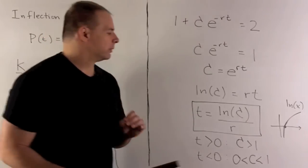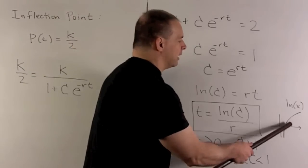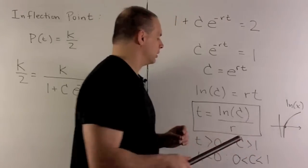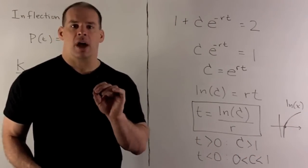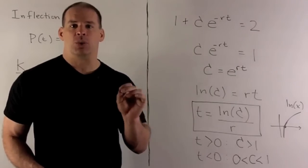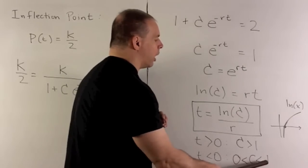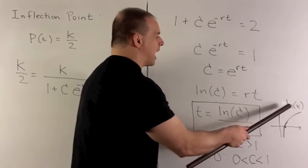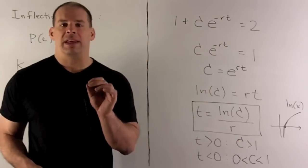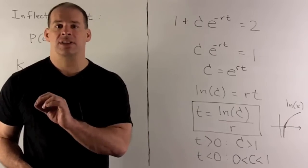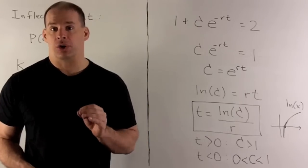If C is greater than 1, the natural log of C is positive, so the inflection point has a positive t value — it's on the positive t axis, and we're looking at a proper S-curve. If C is between 0 and 1, the natural log is negative, so t is less than zero, meaning the inflection point is on the negative t axis. So if we're only looking at t greater than zero, we won't see the inflection point and we don't see the S-curve.